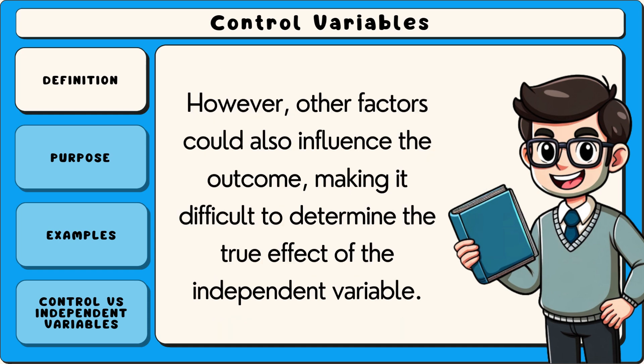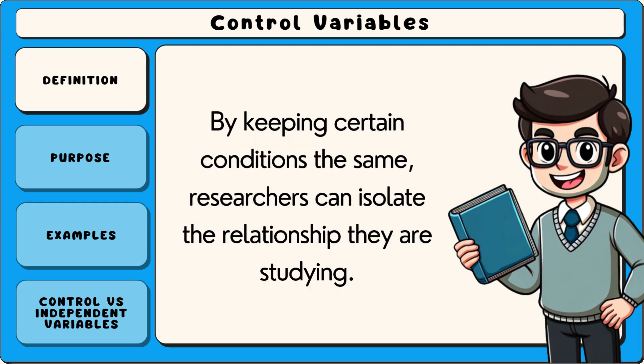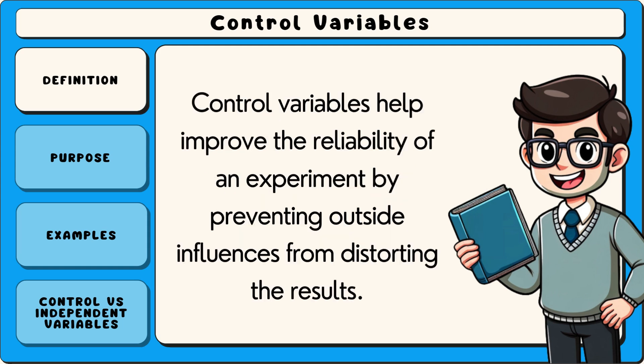However, other factors could also influence the outcome, making it difficult to determine the true effect of the independent variable. By keeping certain conditions the same, researchers can isolate the relationship they are studying. Control variables help improve the reliability of an experiment by preventing outside influences from distorting the results.